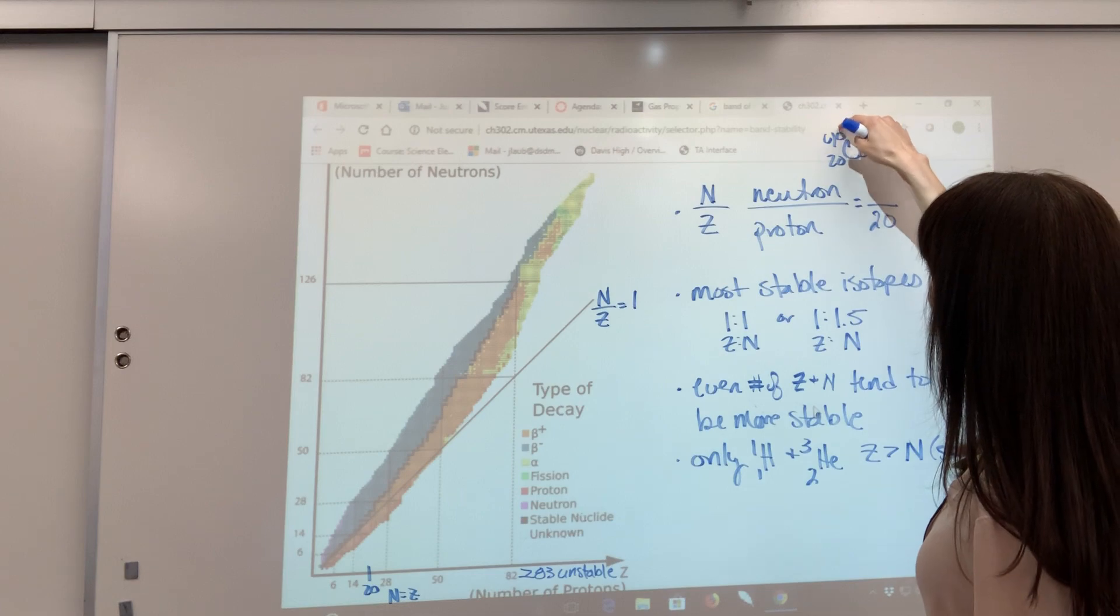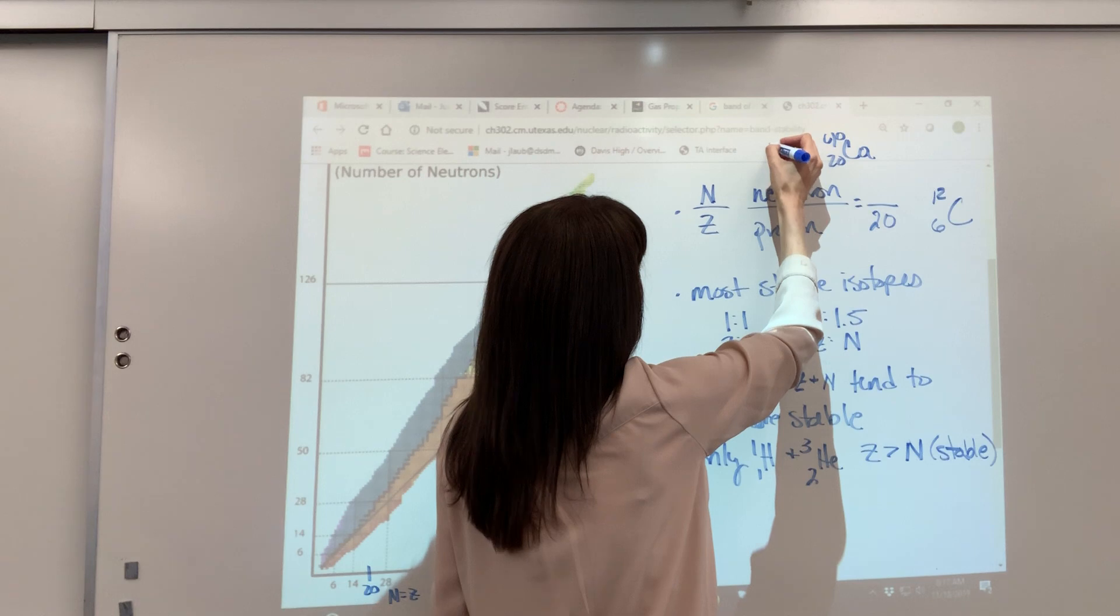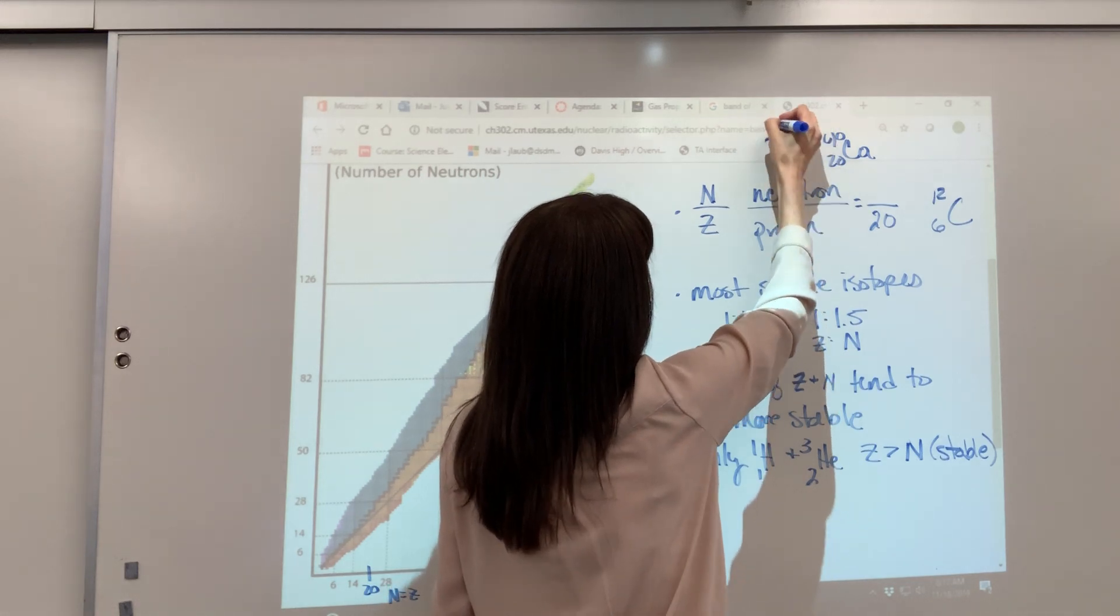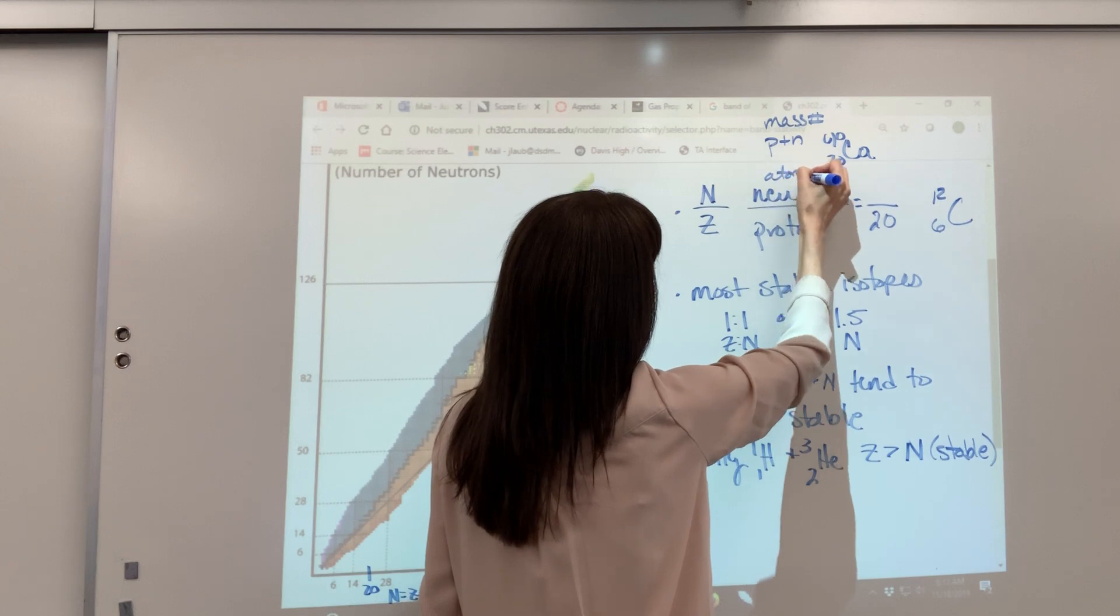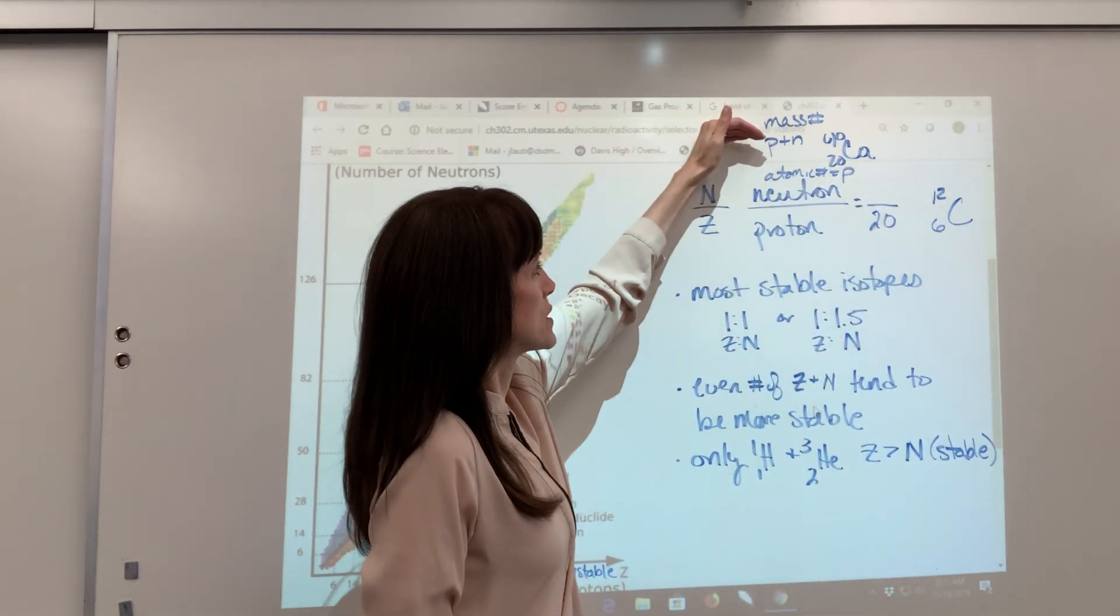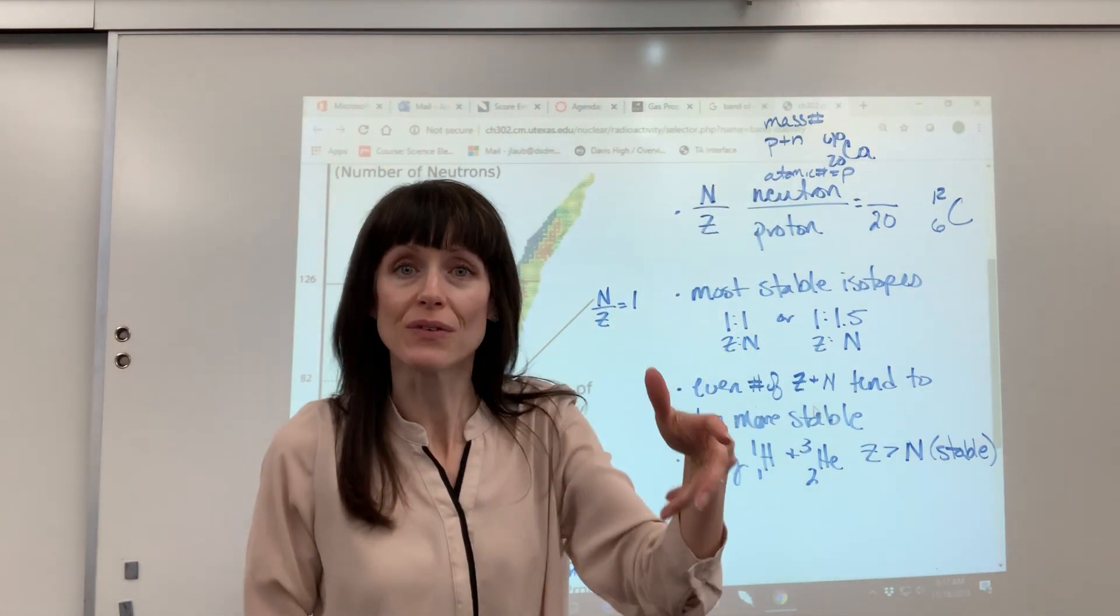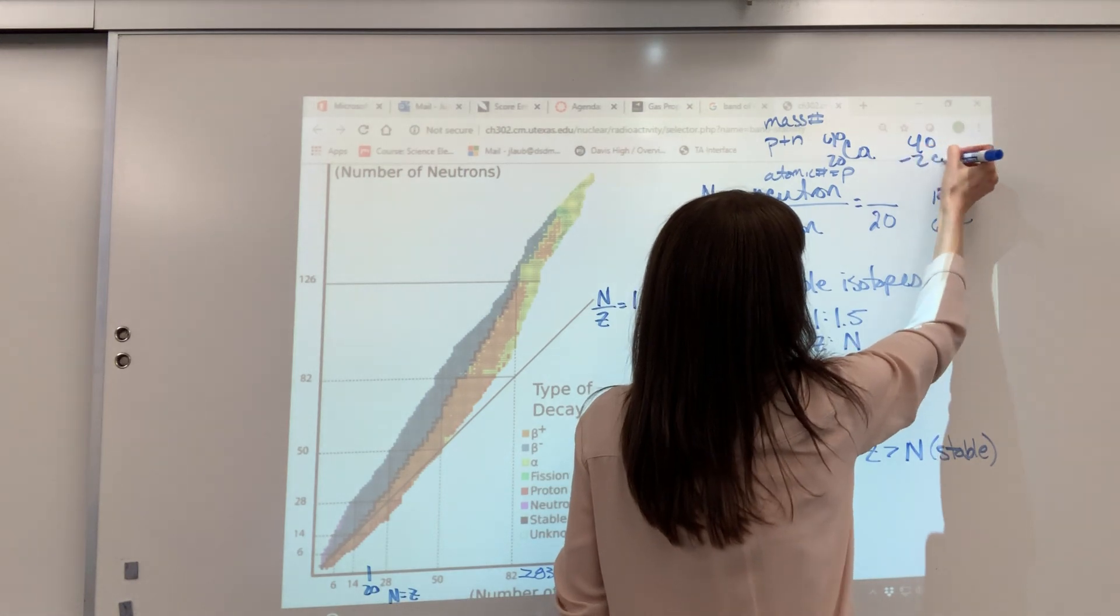That would be 20, and then you count the number of neutrons. Now, remember, mass number minus atomic number gives you the number of neutrons. So mass number up here is protons plus neutrons. Let me remind you, that's mass number. Then down here, we've got the atomic number, and that equals protons. So mass number of protons, neutrons minus atomic number of protons is going to give you neutrons.